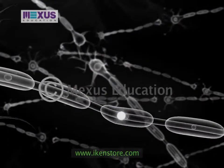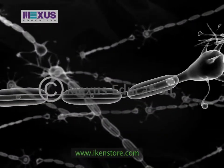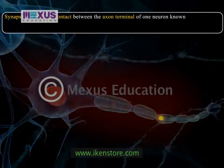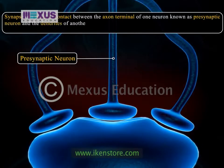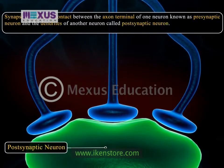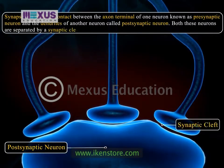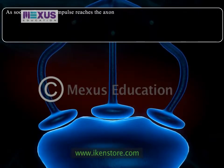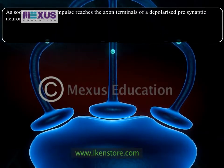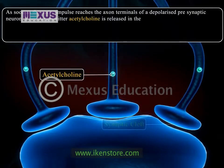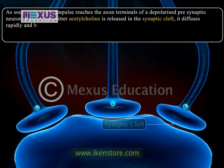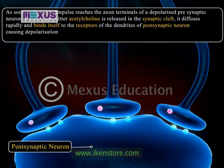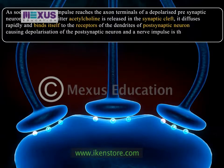This nerve impulse is then transferred from one neuron to another by a process called synapse. It is a point of contact between the axon terminal of one neuron, known as the pre-synaptic neuron, and the dendrites of another neuron called the post-synaptic neuron. Both these neurons are separated by a synaptic cleft. As soon as the nerve impulse reaches the axon terminals of a depolarized pre-synaptic neuron, a neurotransmitter, acetylcholine, is released in the synaptic cleft. It diffuses rapidly and binds itself to the receptors of the dendrites of the post-synaptic neuron, causing depolarization of the post-synaptic neuron, and a nerve impulse is then transmitted.